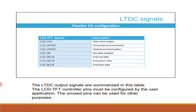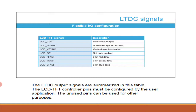The main question is how pixel data mapping compares with color formats. The programmable pixel format is used for data stored in the frame buffer of a layer. This table describes the pixel data mapping versus the selected input color format. There are eight programmable input color formats per layer, including direct color formats such as ARGB8888, RGB888, RGB565, ARGB1555, and ARGB4444.